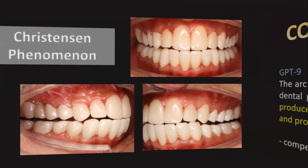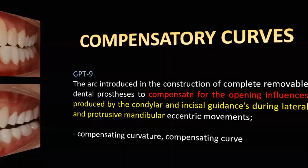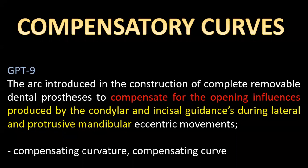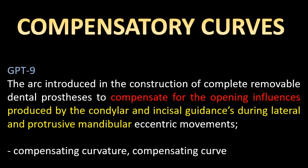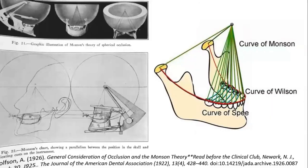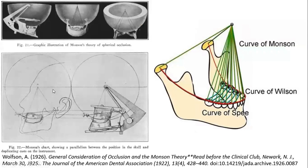So how do we bypass the Christensen phenomenon in complete dentures? We compensate for it with the use of compensatory curves. The definition says that compensatory curves compensate for the opening influence produced by the condyle and incisor guidance during lateral and protrusive mandibular eccentric movements. They are only present in the construction of complete removable dental prostheses.